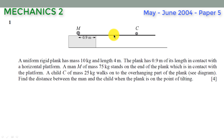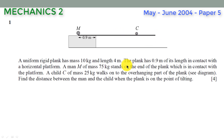The weight of the plank is one of the forces acting on it, which is why we need to know its value and the exact point at which it is acting. It is acting two meters from one end, or equivalently two meters from the other end. The rest of the question goes as follows.